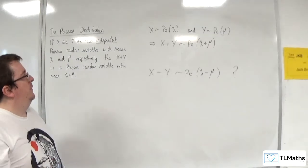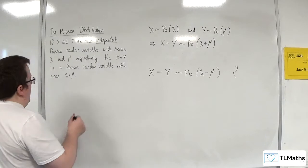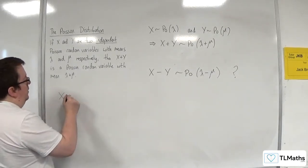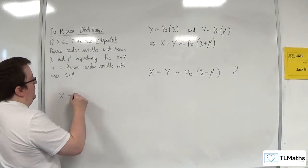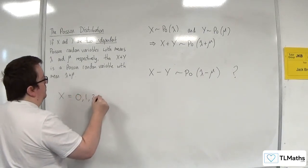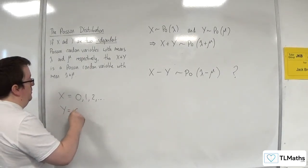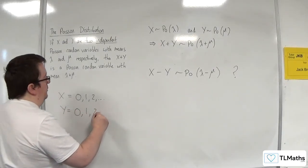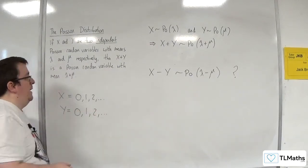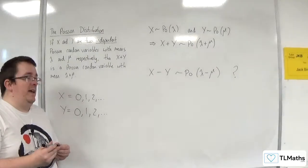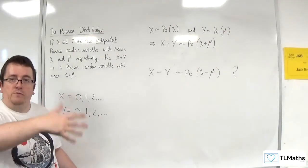Now, why is that not the case? Well, remember X can take on any values 0, 1, 2, etc., and Y, being a Poisson distribution, can also take on 0, 1, 2, etc. So if you add X and Y together, then you're going to be able to get anything from 0, 1, 2, etc.